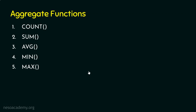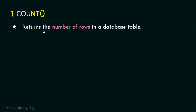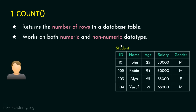We'll start with the first function, the COUNT function. This function returns the number of rows in a database table. For example, we have a database which may contain n number of tables. When we apply this COUNT function for a table, it returns the number of rows. COUNT can work on both numeric and non-numeric data types. Let's say there is a table named 'student' with columns: id, name, age, salary, and gender.